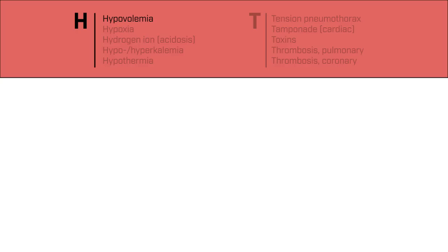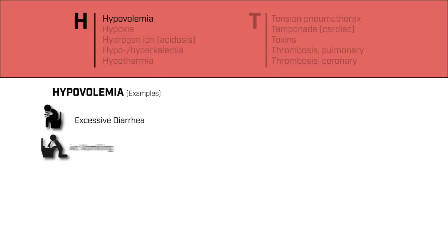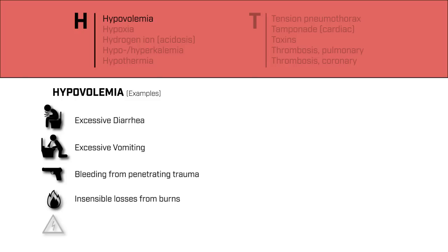Hypovolemia is a common cause of cardiac arrest, which can occur as a result of excessive fluid or blood loss. This results in a decreased amount of fluid volume in the circulatory system, leading to decreases in tissue and organ perfusion. Examples of this include excessive amounts of diarrhea and/or vomiting, bleeding from traumas, and volume loss from severe burns.